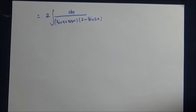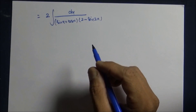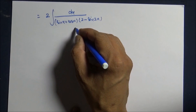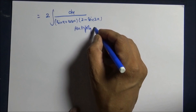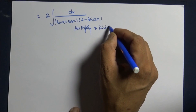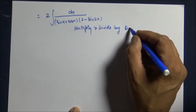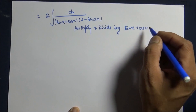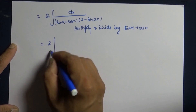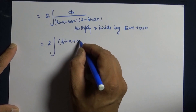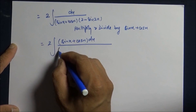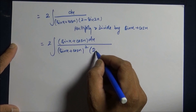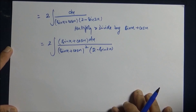Again, this is a trouble. So what you can think is multiplying and dividing — now this is a catch — multiply and divide by sin x plus cos x. Why? Because sin x plus cos x the whole square and this is 2 minus sin 2x.